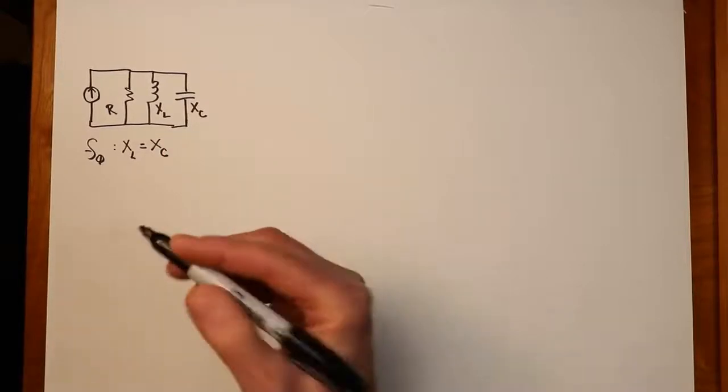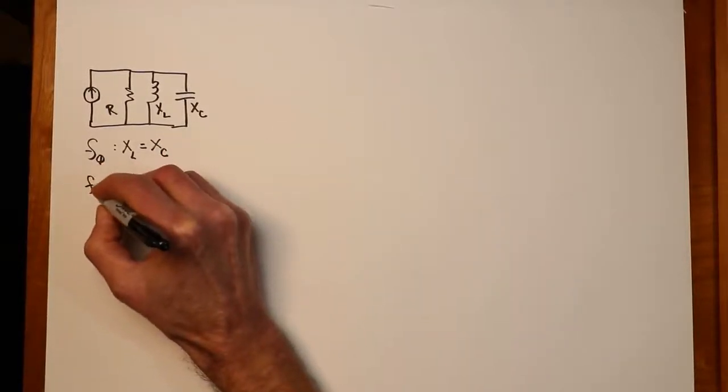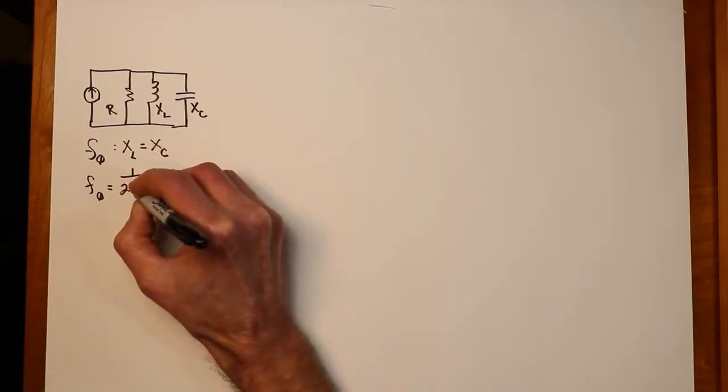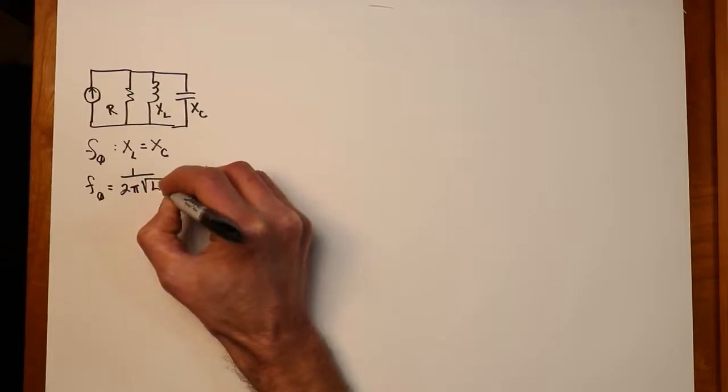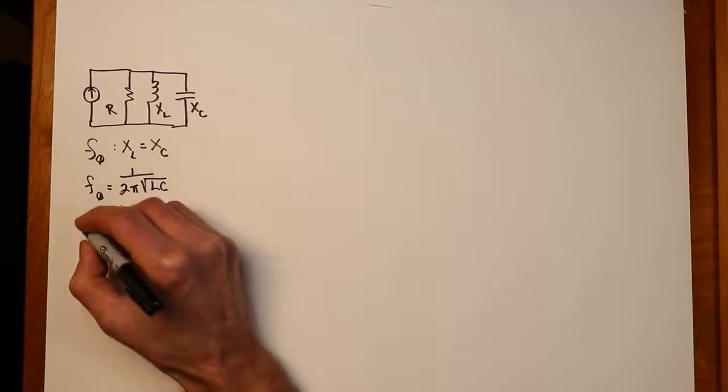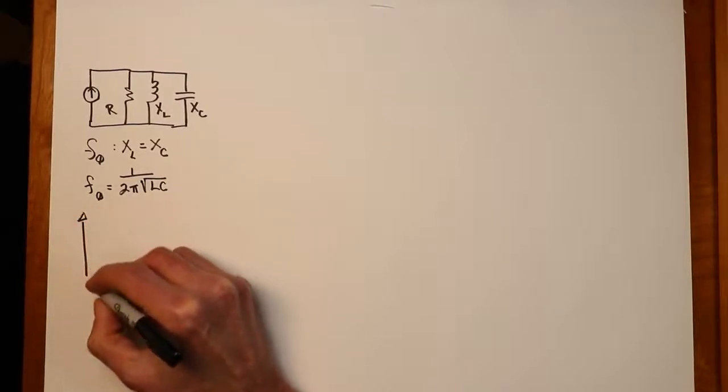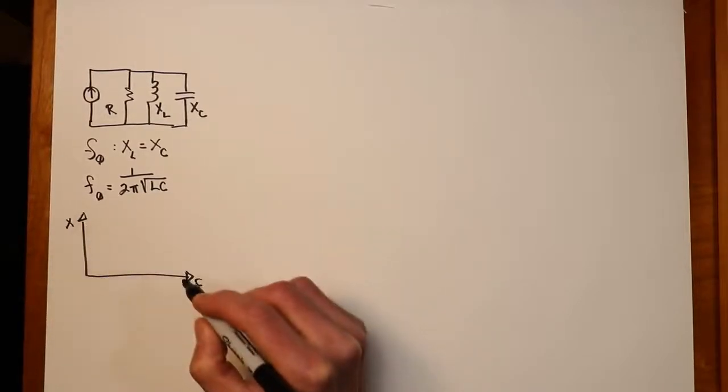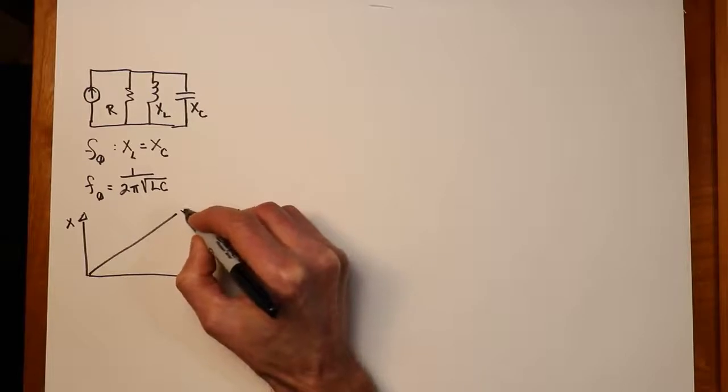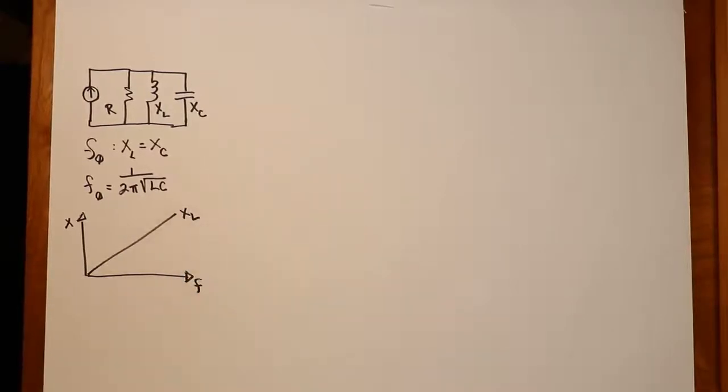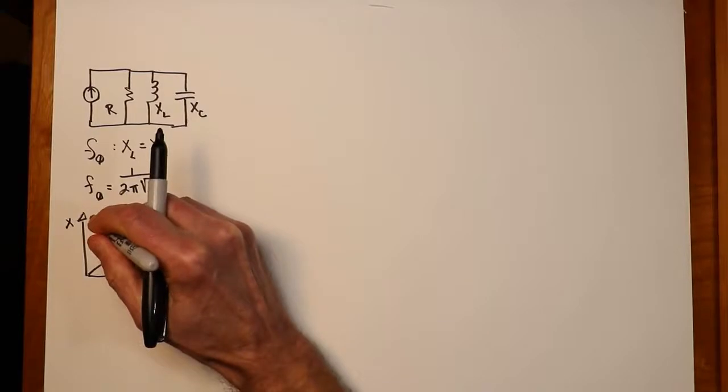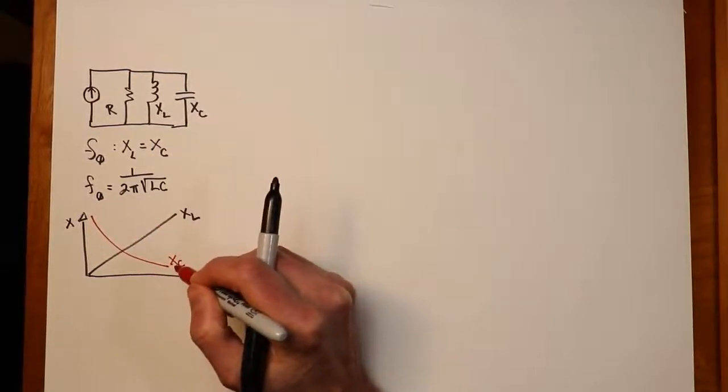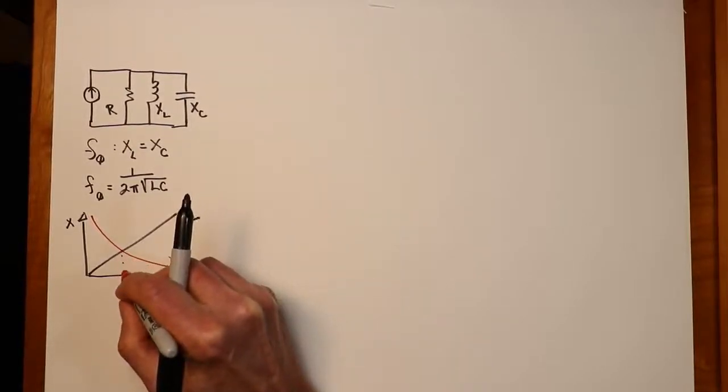It will still be the case, again, ideally, that F0 will equal 1 over 2 pi times the square root of L C. Now, remember what these impedance versus frequency plots look like. X sub L looks like this, meanwhile, X sub C does something like that. Our resonant frequency is going to occur where those are the same.